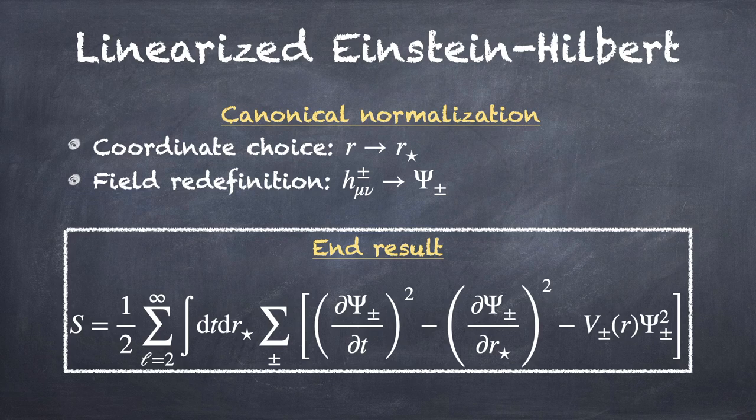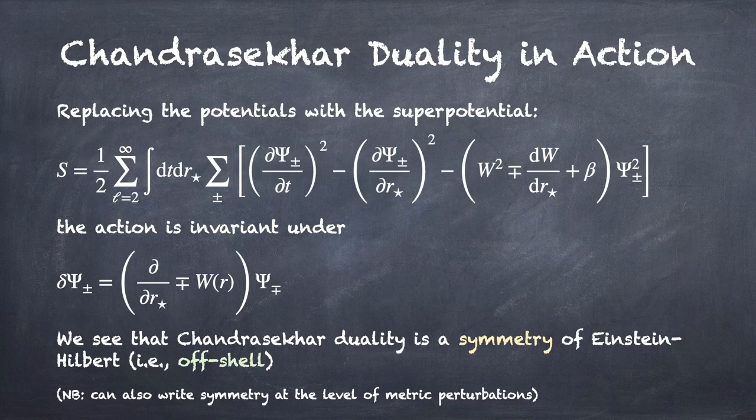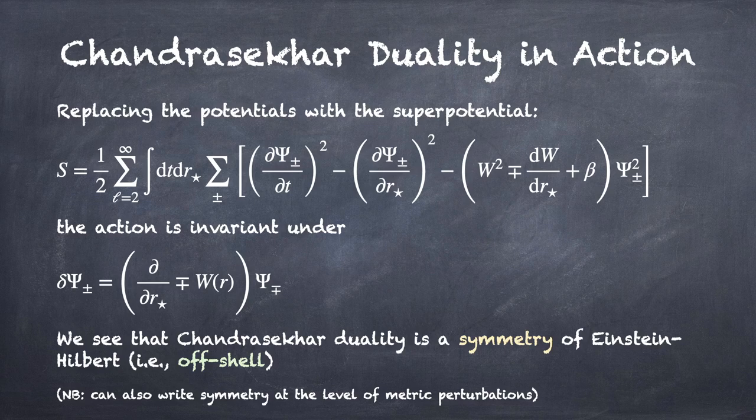So the Einstein-Hilbert action turns out to take this very nice simple form. And if you rewrite the potentials, V_plus and V_minus, now in terms of the superpotential, it's pretty straightforward to check that this expression here, delta_psi_plus_minus, is a symmetry of the action. It switches psi_plus to psi_minus and vice versa. And that's a symmetry of the action. So it lifts the Chandrasekhar duality to an off-shell symmetry, and on-shell just reduces to the usual duality. So it's a symmetry of the action. You can write it also at the level of metric perturbations, which is an off-shell, genuine symmetry, and leads to isospectrality.